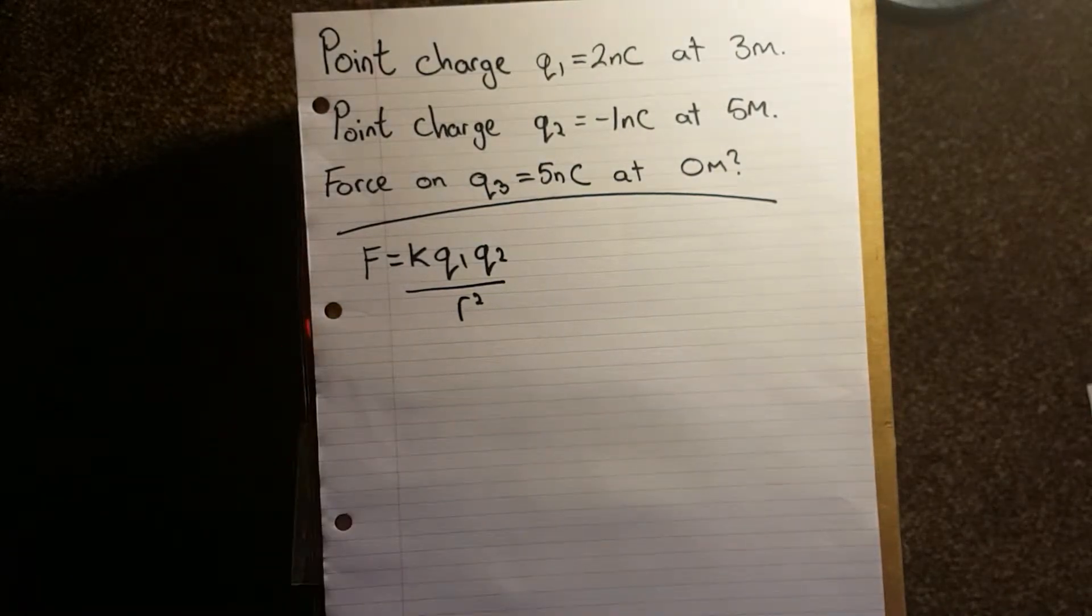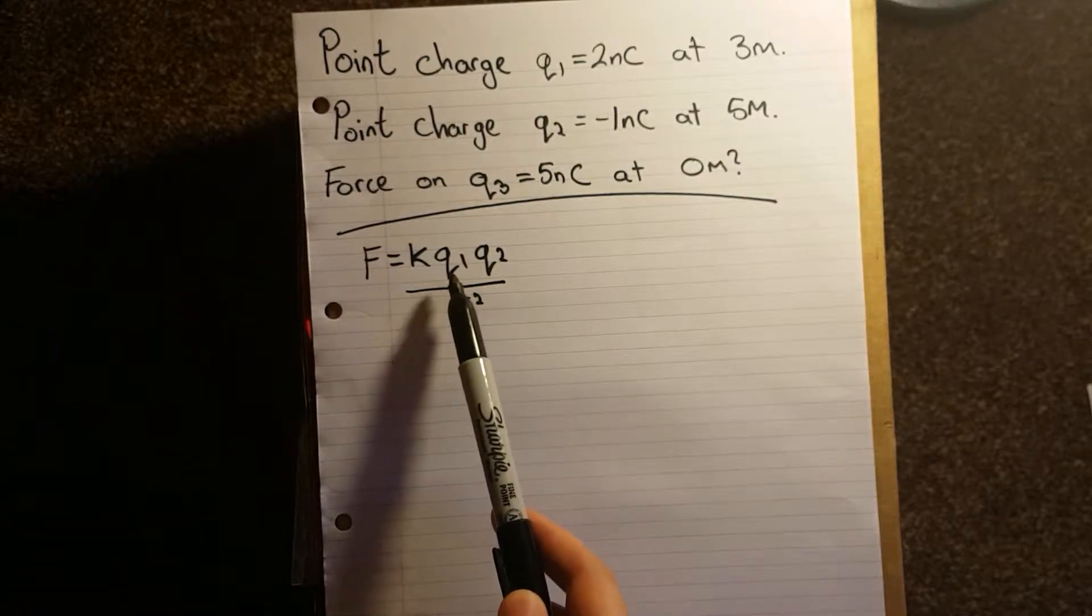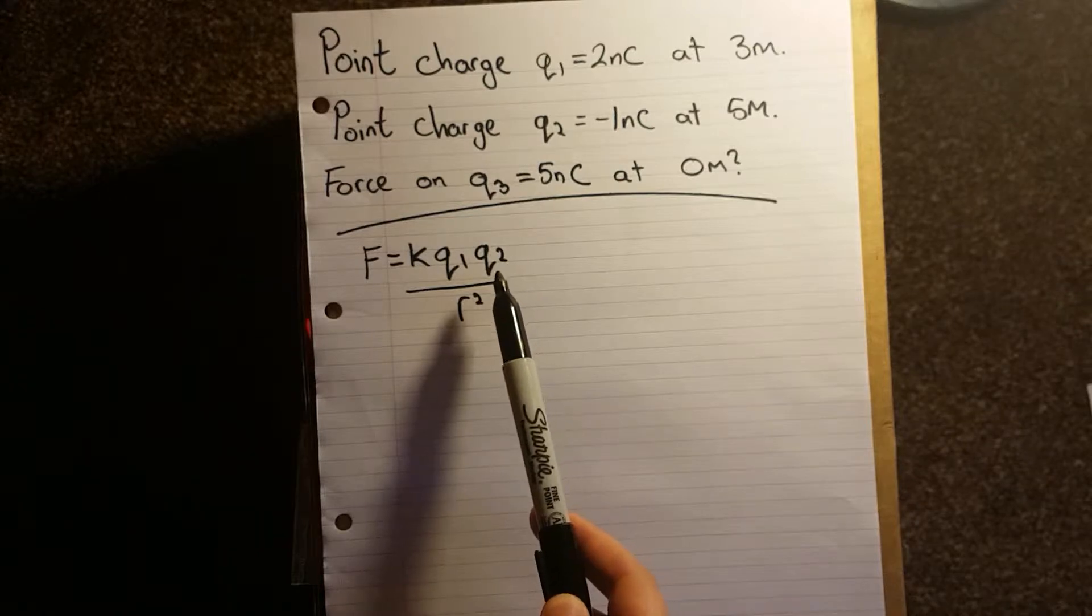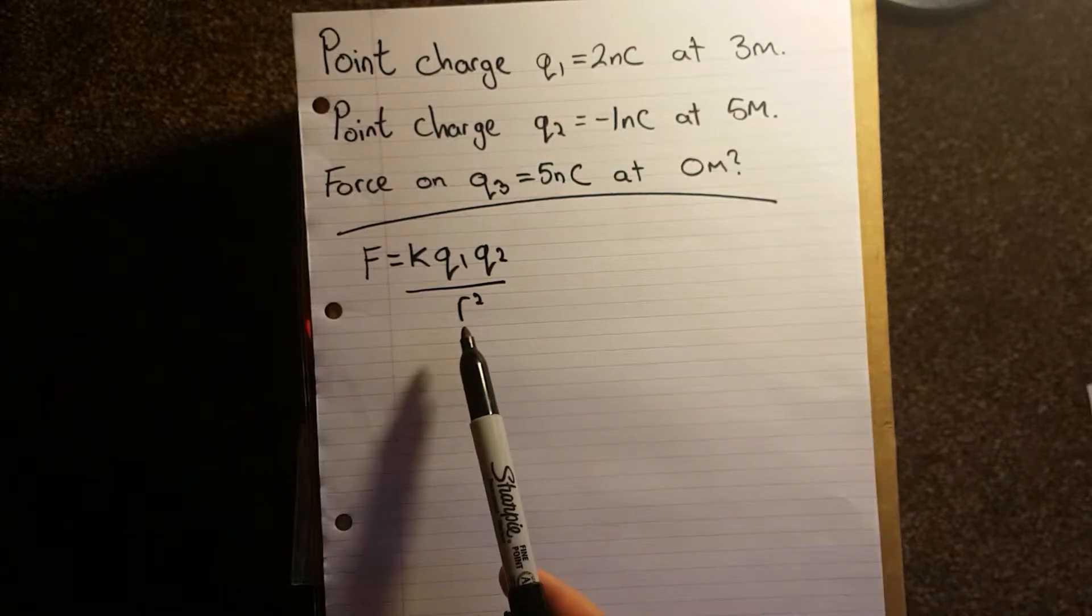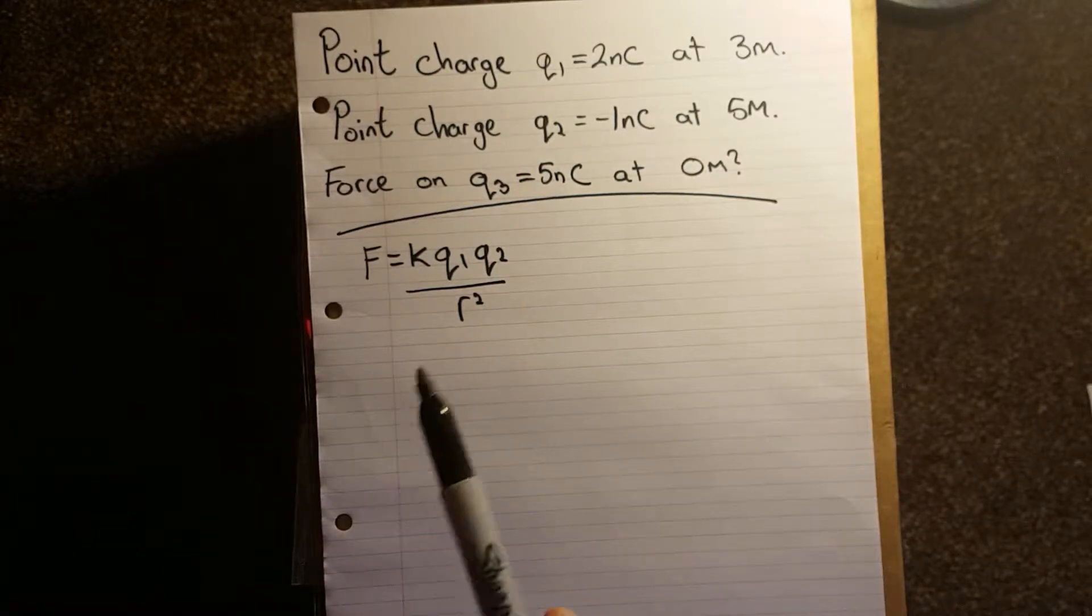Coulomb's law all it says is the electric force acting on a point charge Q1 due to the presence of a second point charge Q2, and this is the square of the distance between them. Do note that this also satisfies Newton's third law.